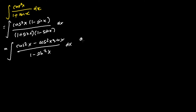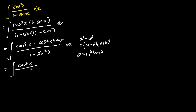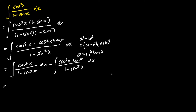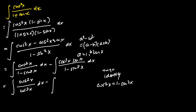Applying the algebraic formula that a square minus b square is equal to (a minus b)(a plus b), which in this case a is equal to 1 and b is sine x. Then I can further split the integral up into two integrals. The first integral will be the integral of cosine square x over 1 minus sine square x, and the second integral will be the integral of cosine square x sine x over 1 minus sine square x dx. In the denominator, we can apply the trigonometric identity that cosine square x equals 1 minus sine square x. Hence, I substitute 1 minus sine square x as cosine square x in the denominator.